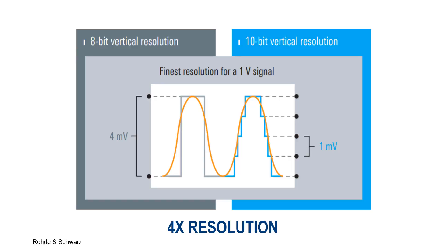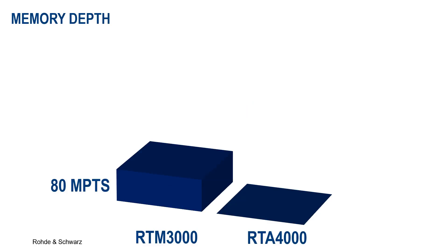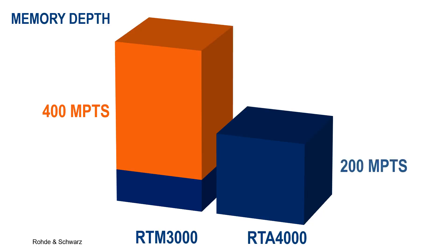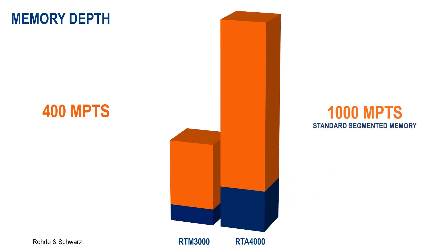Perhaps the most notable difference between these instruments, though, is their ability to capture long time periods of data. While the RTM3000 has an 80-megasample memory depth that can be upgraded to 400 with history and segmented memory mode options, the RTA4000 has a 200-megasample memory depth that increases to an astounding 1 billion samples.